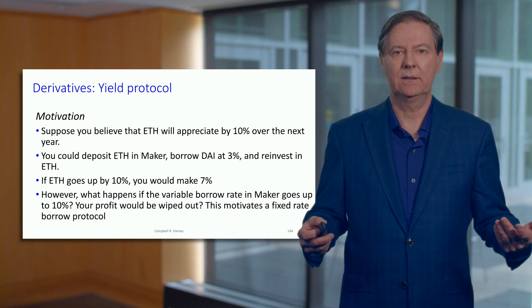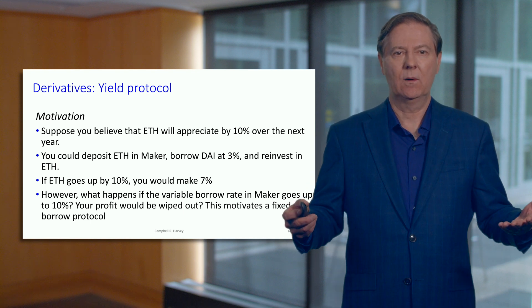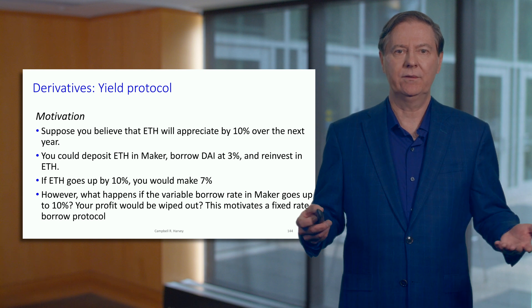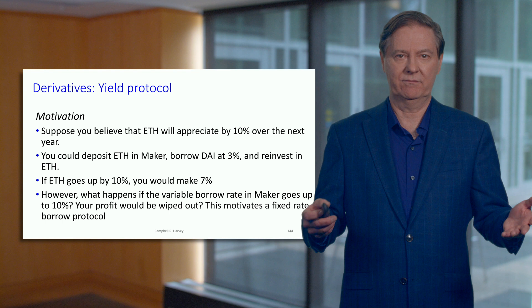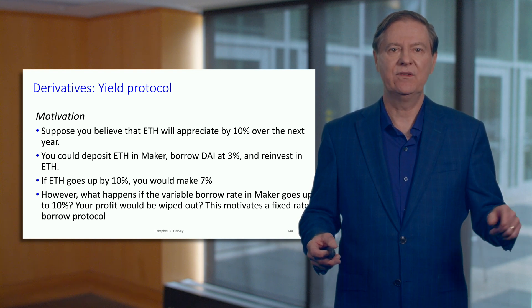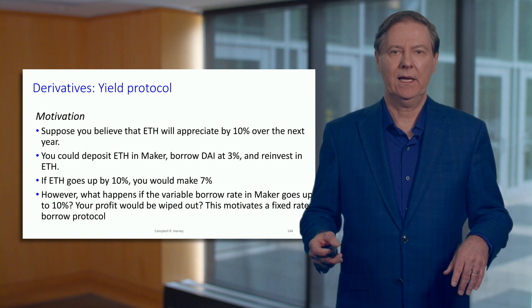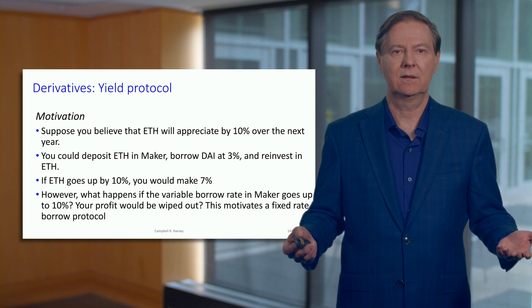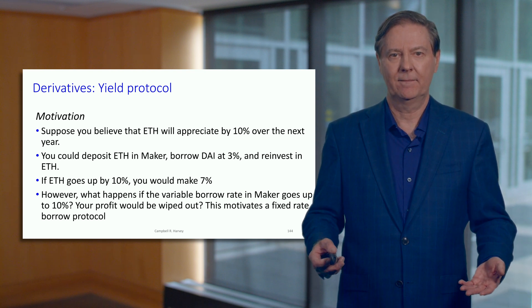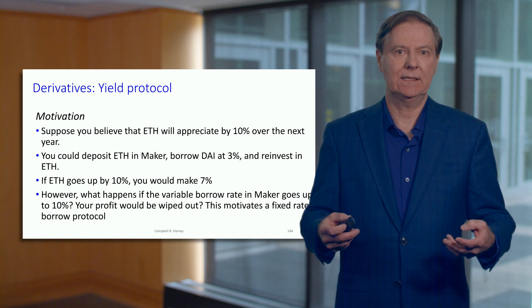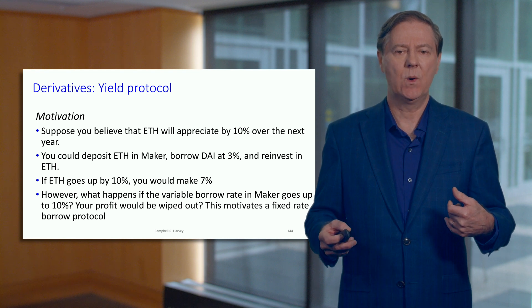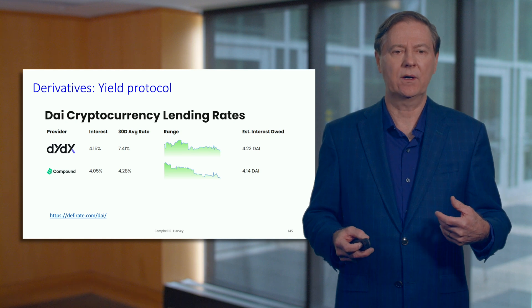If the Ether goes up by 10%, your asset has gone up by 10%, you have borrowed, and you need to pay 3%, so you've got a profit of 7%. The problem is that that 3% rate is not set in stone — it can change. If that rate went to 10%, then even if the ETH goes up in value, you have to pay the 10% and you make nothing. So I'm trying to motivate actually having a rate that is fixed, so you can lock in a known rate. This is what yield protocol actually does.